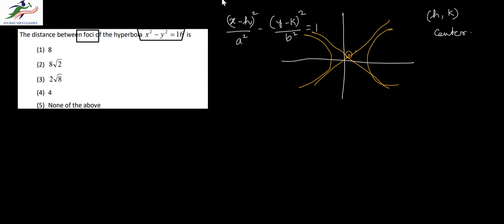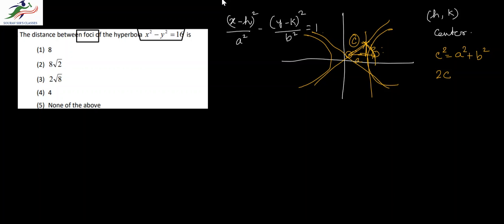From the center, the horizontal distance to the hyperbola is a, the vertical distance to the asymptote is b, and c is the distance from the center to the focus. Therefore c is defined by c² = a² + b². The distance between the two foci would be 2c, since the foci lie on either side of the center.